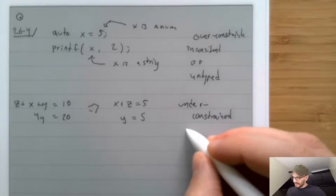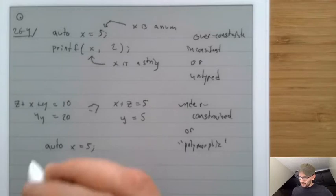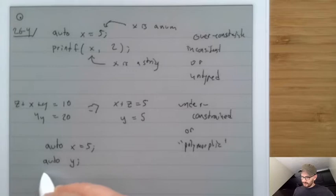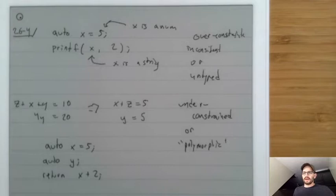An under-constrained system is like a polymorphic program. For instance, if we write auto x = 5 and auto y, then return x + 2, since we don't use y, it could be any type. That's a boring example of something unconstrained, but we'll look at more interesting examples of polymorphism later.